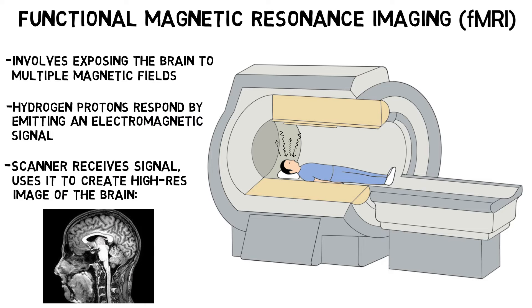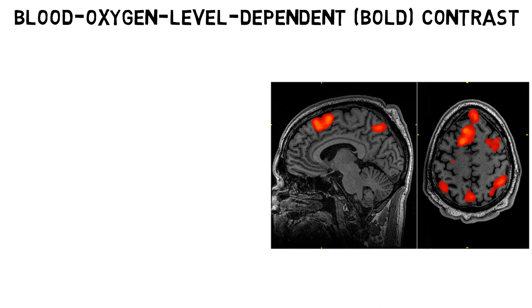Additionally, the fMRI scanner can detect differences in the magnetic properties of oxygenated versus deoxygenated blood, and thus can identify changes in levels of oxygenated blood in different regions of the brain using a method called blood oxygen level dependent, or BOLD, contrast. BOLD is typically what enables us to identify which brain areas are most active in fMRI.